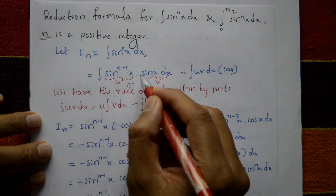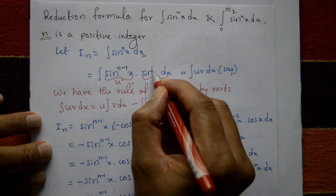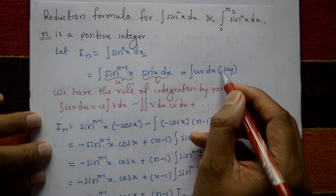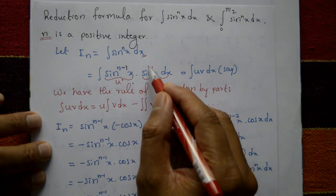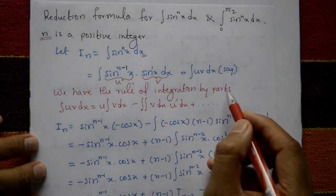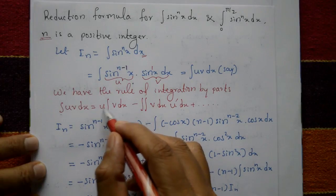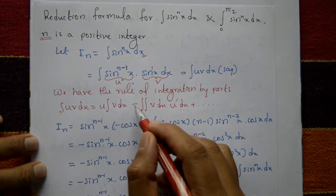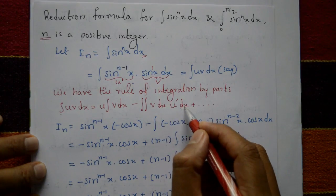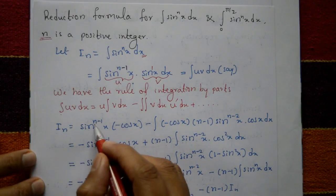We write sinⁿx as sinⁿ⁻¹x · sinx, splitting the integrand. We assign u = sinⁿ⁻¹x and dv = sinx dx, then apply the rule of integration by parts: ∫u·v dx = u·∫v dx − ∫(∫v dx)·u' dx.